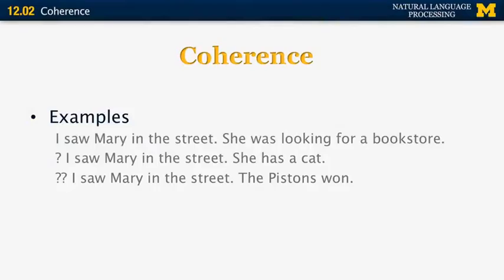What about the next example? 'I saw Mary in the street. The pistons won.' Now this is really a bad example of coherent discourse. There's really no connection between those two sentences. It's very hard to imagine a situation in which those two would make sense together. As you can see, we can have a variable degree of coherence in discourse, and better written text is more coherent.